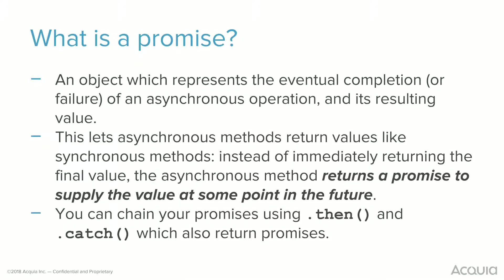When you think about what that means for your application — if you're making a call to an external API, there's going to be some time before that value is returned. Rather than pausing the execution of your code and waiting for that return value, you can move on, get this promise, and do something with that value later. Before promises, if you've done anything with Node.js, you've probably seen callback patterns, where you pass a function to another function that gets invoked when the async operation is done. When using promises, you can chain them together — they've got a simple API in ES6 with a .then() method and a .catch() method to handle errors.